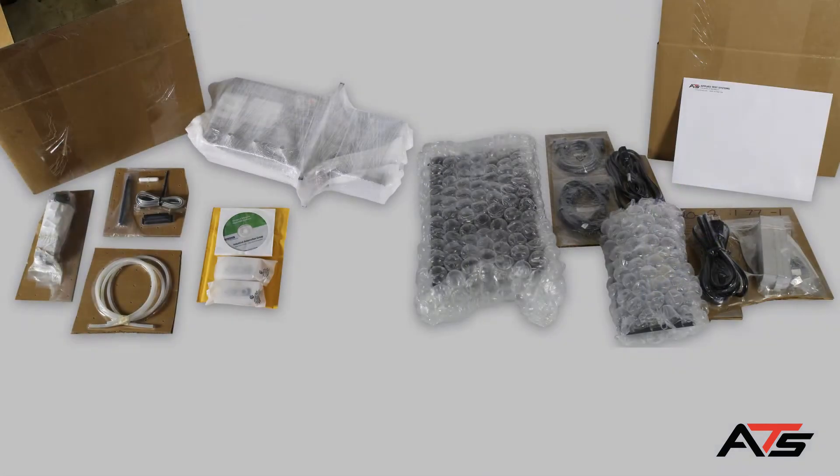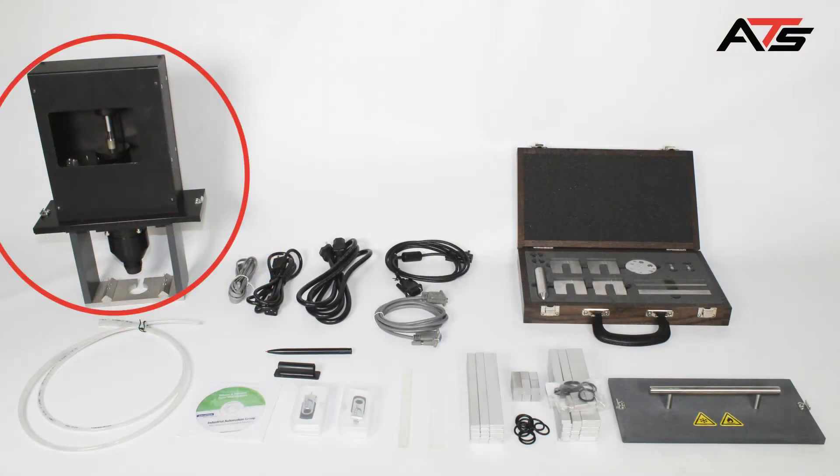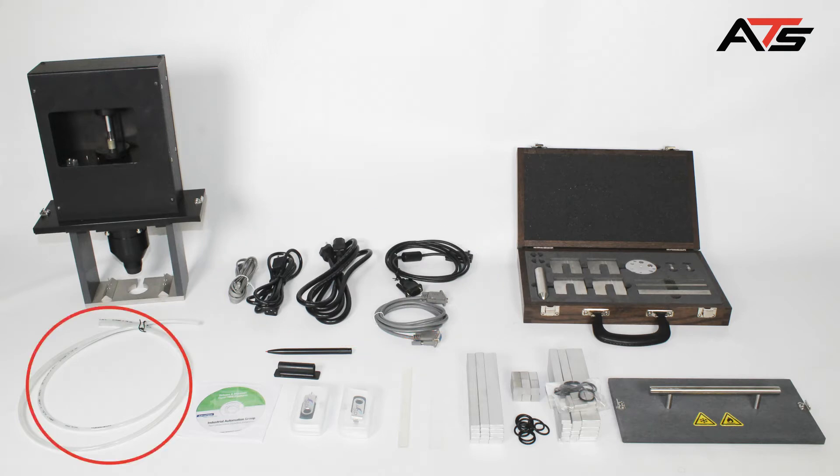The accessories included with the BBR are the load frame, all necessary connection cables and air hoses, the BBR gauge kit, specimen molds, the BBR lid, the stylus with stylus holder, and the BBR software.